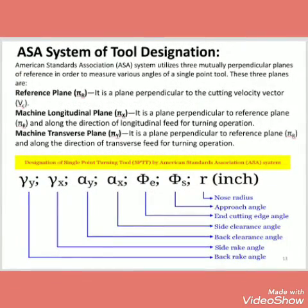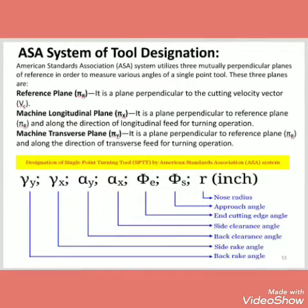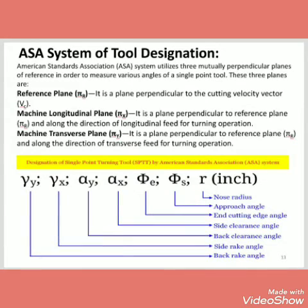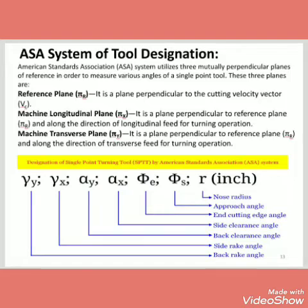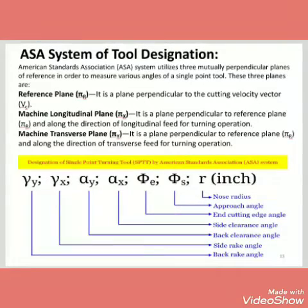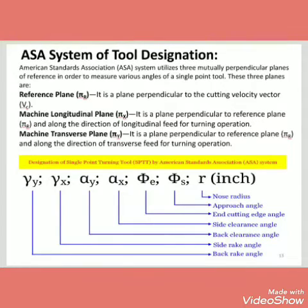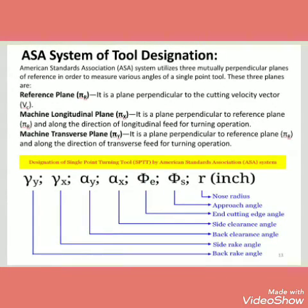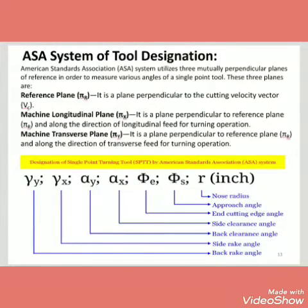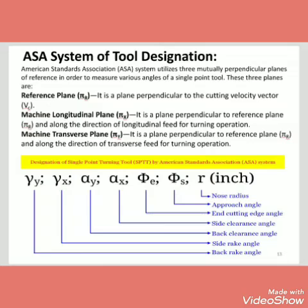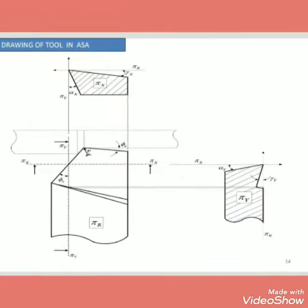Next is the ASA system of tool designation. The nomenclature of the tool is given by these elements. The reference planes are: the machining longitudinal plane (pi-x) and the machining transverse plane (pi-y). Other elements are nose radius, approach angle, end cutting edge angle, side clearance angle, back clearance angle, side rake angle, and back rake angle — a total of 7 elements in the ASA system of tool designation.